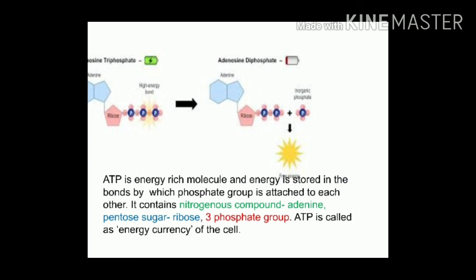ATP is a triphosphate molecule formed from adenosine ribonucleoside. Energy is stored in the bonds by which the phosphate groups are attached to each other. As per the need of the cell, energy is obtained from ATP molecules by breaking the phosphate bond, and ATP molecules are stored in the cell as per its need.